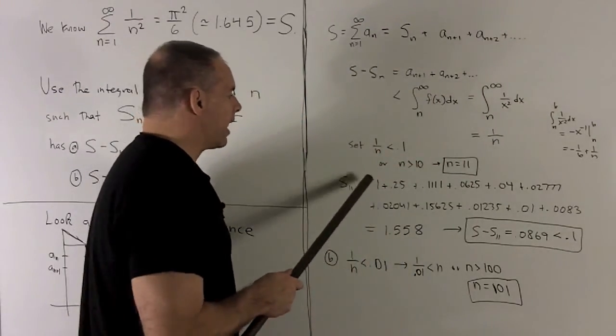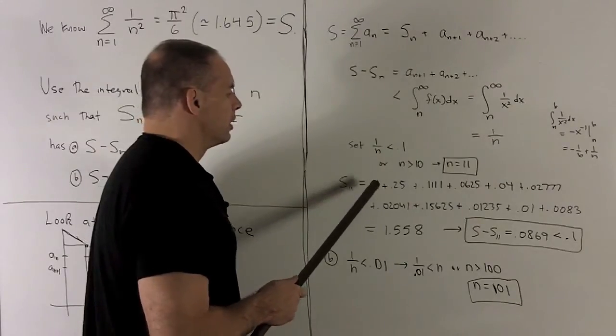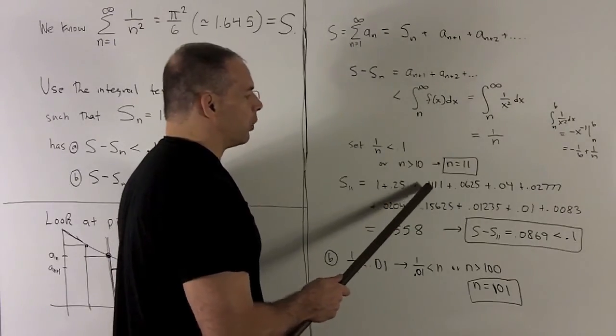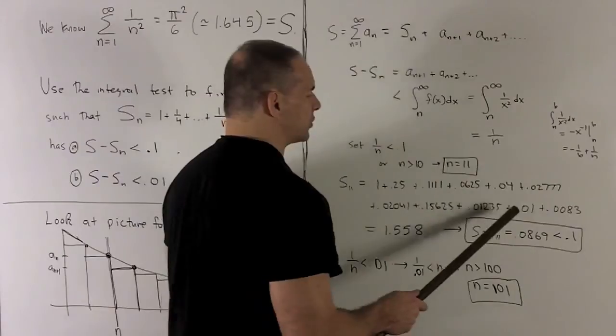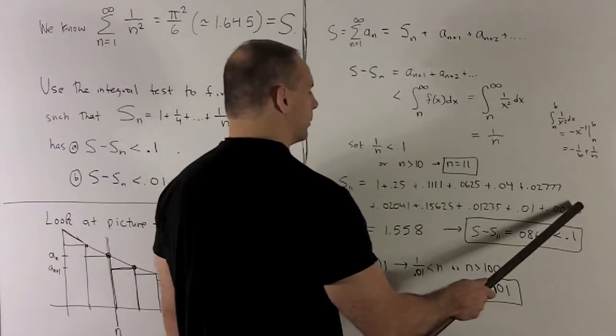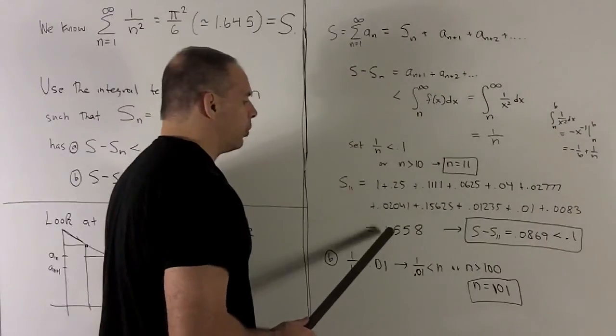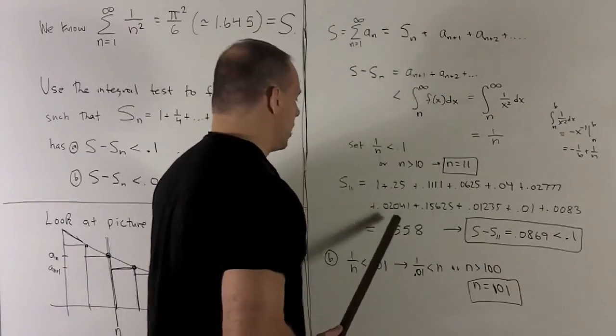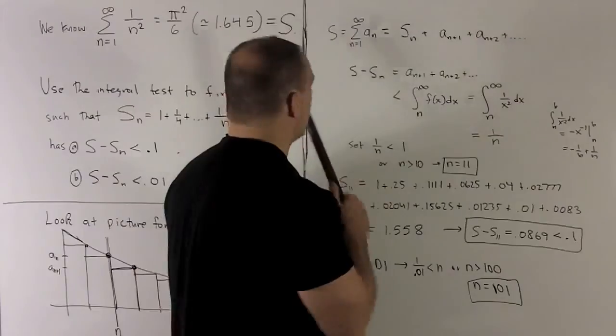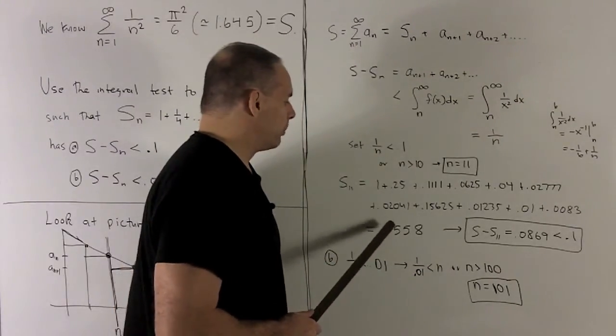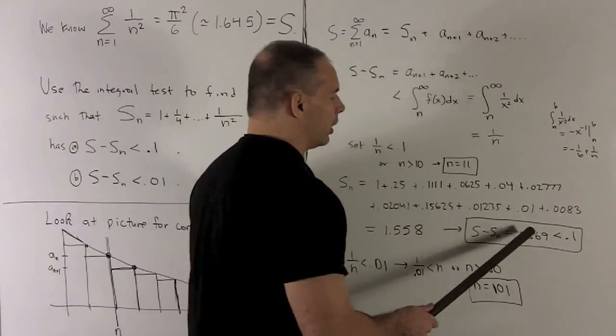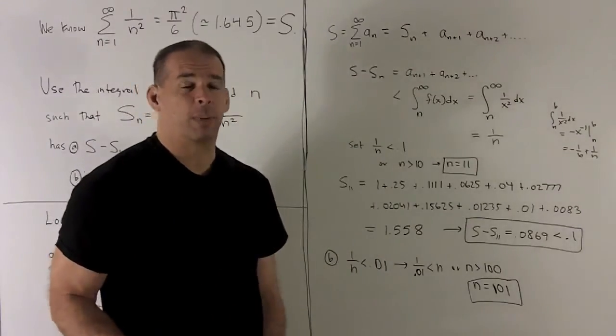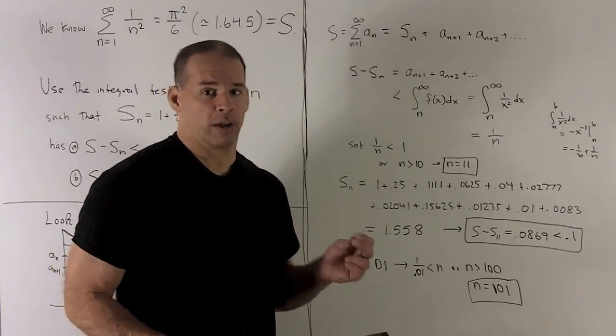I write out the first 11 terms of the partial sum. So it's 1 plus a half squared, which is a quarter, plus a third squared, which is 1 ninth or 0.111, and then so on, all the way out to 1 over 11 squared. I add all these up. I get 1.558, rounding off to the third decimal place. I'm going to take the difference between the sum that I know, which is 1.645, subtract off 1.558, and that's going to give me 0.0869. And that's definitely less than 0.1. So using the 11th partial sum gets me to within 0.1 of the actual sum.